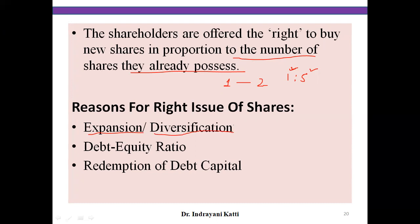The company may already be in one business line and wants to manufacture different products or render different services — that is diversification. For that, the company needs additional capital, which can be procured or acquired through a rights issue.